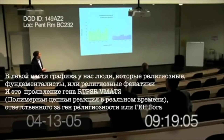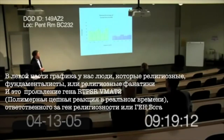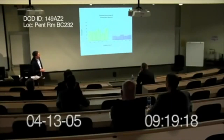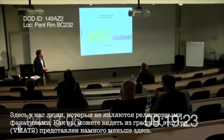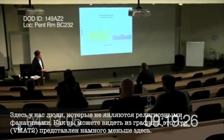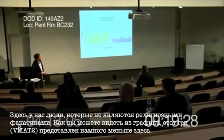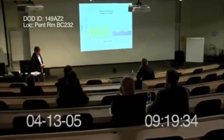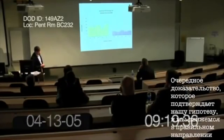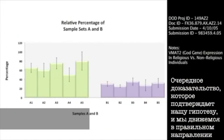On the left over here, we have individuals who are religious fundamentalists, religious fanatics. And this is the expression — RT-PCR, real-time PCR expression of the VMAT2 gene. Over here we have individuals who are not particularly fundamentalists, not particularly religious. And you can see there's a much reduced expression of this particular gene, the VMAT2 gene. This is another piece of evidence that supports our hypothesis for the development of this approach.